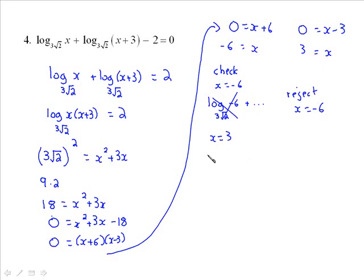And then check x equal 3. Now I also have a positive feeling about this one, because this is a positive term. I don't see anything really weird happening inside there. We're okay with that first term. The log of 3 we can live with. Plus the log base 3 root 2 of 3 plus 3. We're okay there, that's positive 6. And then minus 2 equals 0. We're okay. So therefore x is in fact equal to 3.